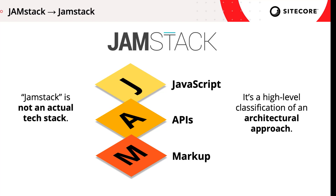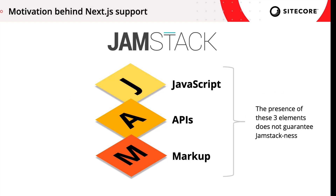In line with this thinking, in early 2020, JAMstack.org updated their site to spell JAMstack with only a capital J, rather than capitalizing the entire JAM acronym. This means that using JavaScript APIs and markup does not automatically guarantee that an app is a JAMstack app. And conversely, an app can be a JAMstack app even if it doesn't use JavaScript.